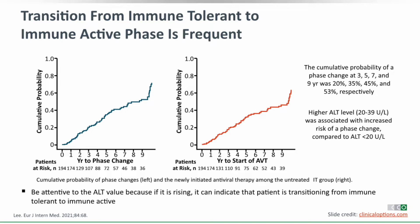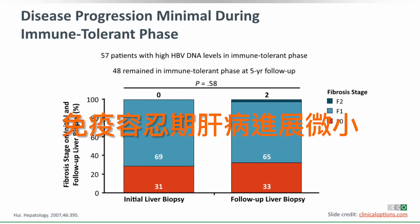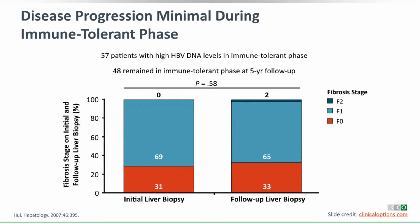Remember that immune-active disease is a phase we do treat. Regarding how frequently actual disease is found among immune-tolerant patients: if you biopsy these patients, significant disease would be infrequent. Data from an initial biopsy and a follow-up biopsy five years later in patients who remained immune-tolerant shows the vast majority had no fibrosis or very minimal fibrosis (F1). Significant fibrosis is extremely rare even with five years of follow-up.